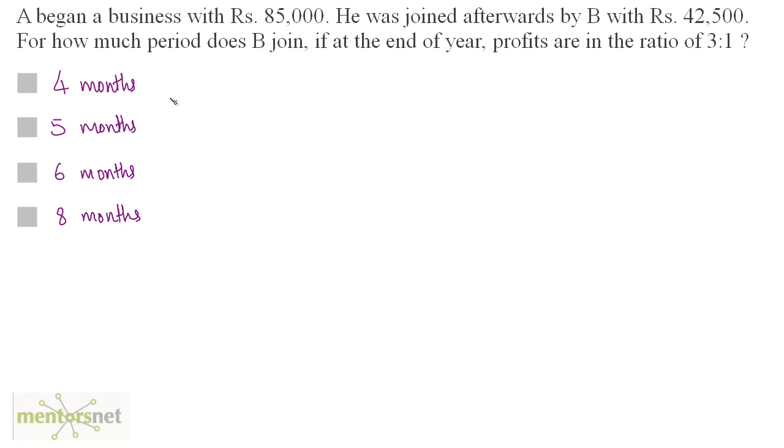A began a business with 85,000 rupees. He was joined afterwards by B with 42,500 rupees. For how much period does B join if at the end of year profits are in the ratio of 3:1?